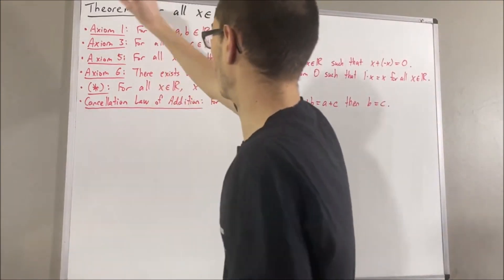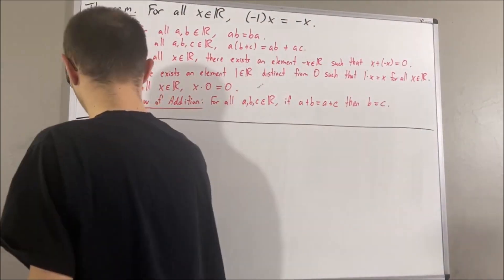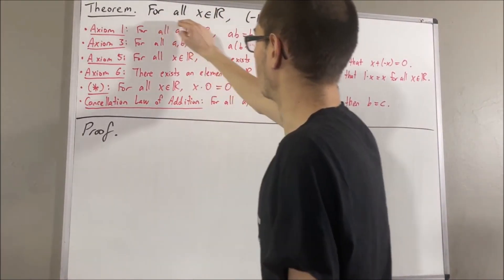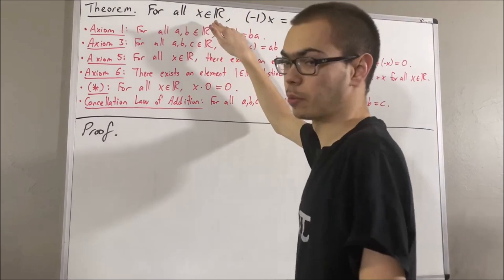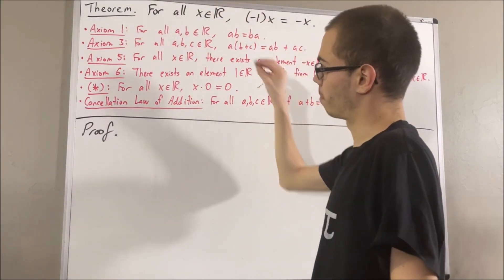Okay, so now let's get into proving this theorem. To start with the proof, since we're trying to prove a statement about every real number, let's give ourselves an arbitrary real number, call it x.